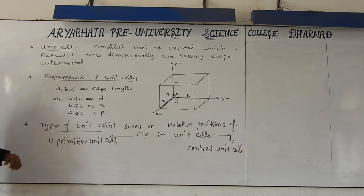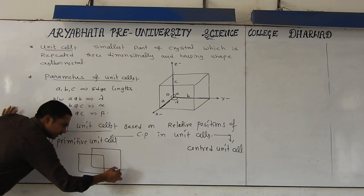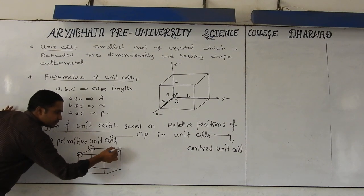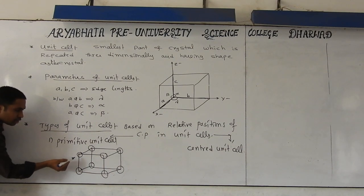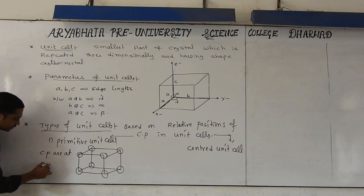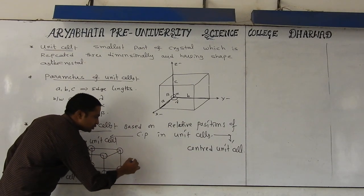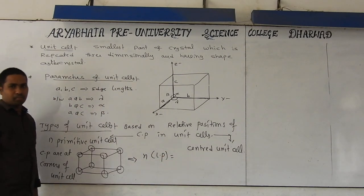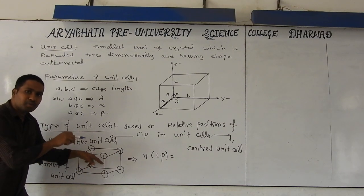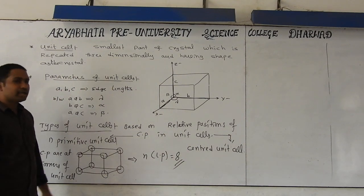What is the meaning of primitive unit cell? Primitive unit cell means it is the smallest part of a crystal in which the constituent particles are only located at the corners of the unit cell. Whatever shape, it doesn't matter. The constituent particles are only at the corners — this is called a primitive unit cell. Number of lattice points in a primitive unit cell: counting 1, 2, 3, 4, 5, 6, 7, 8 — that is 8 lattice points in the case of a primitive unit cell.